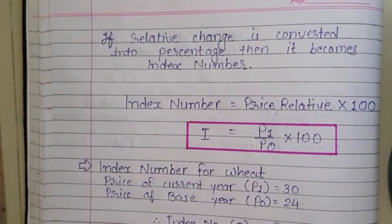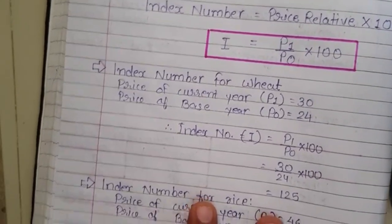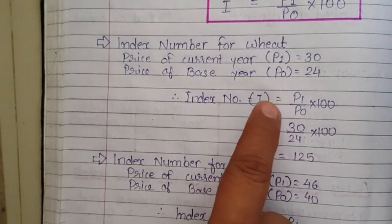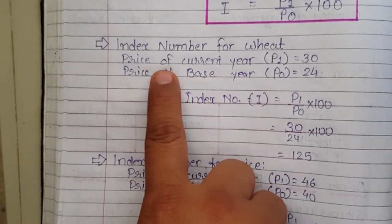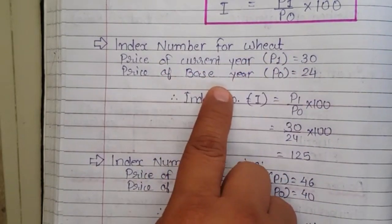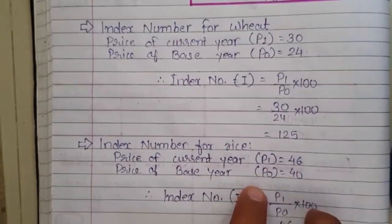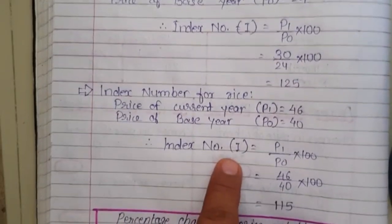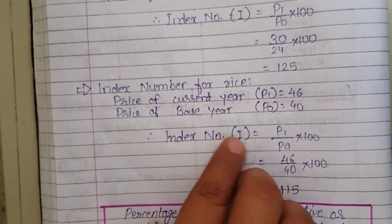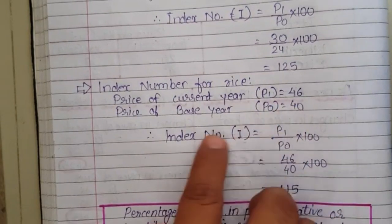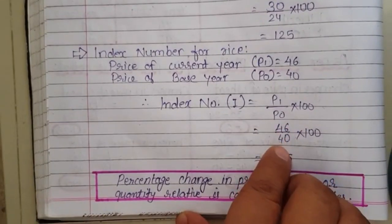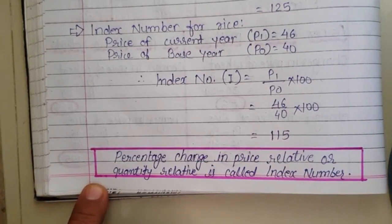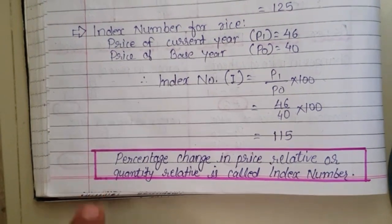Let us understand this formula with the same example discussed earlier. Index number for wheat: P1 = Rs. 30, P0 = 24. So I = 30 divided by 24 into 100 = 125. Index number for rice: P1 = 46, P0 = 40. So I = 46 divided by 40 into 100 = 115. We conclude that percentage change in price relative or quantity relative is called index number.